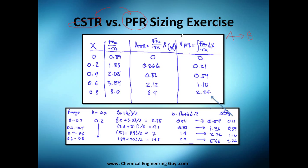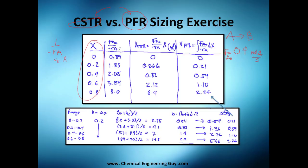The reaction is A turns into B, the initial flow rate is 0.4 moles of A per second. We have a table with rate of reaction versus conversion. I substituted everything, got the conversions, calculated Fa0 divided by the rate of reaction, which gave me the Fa0/-rA values in this column.